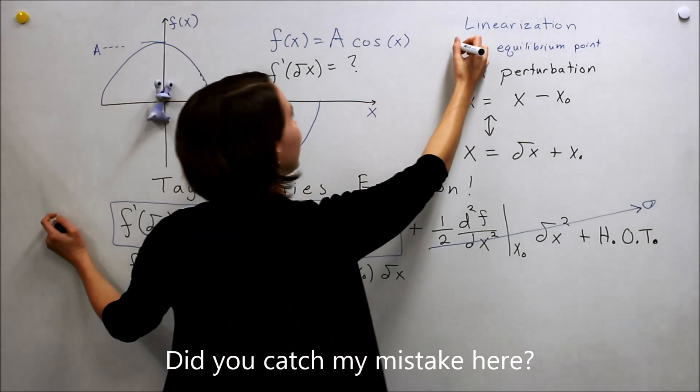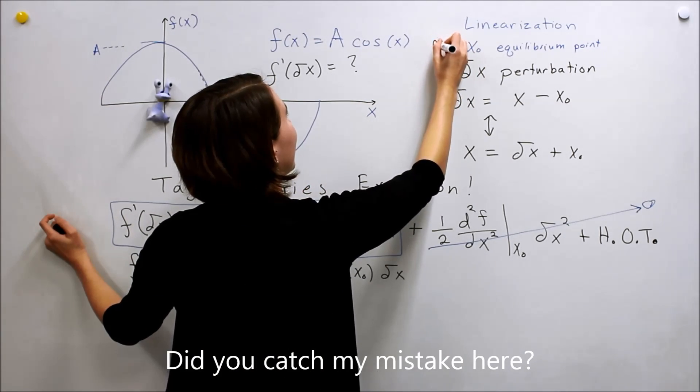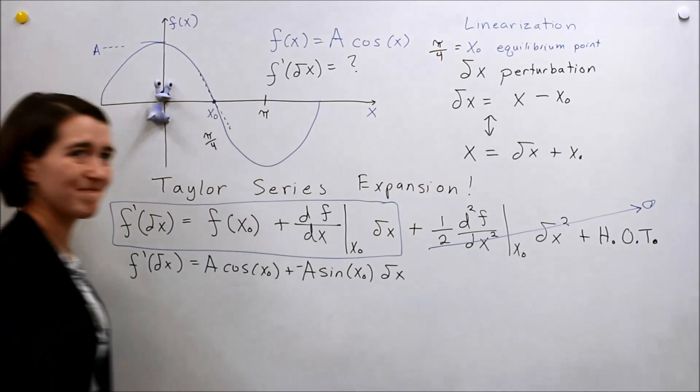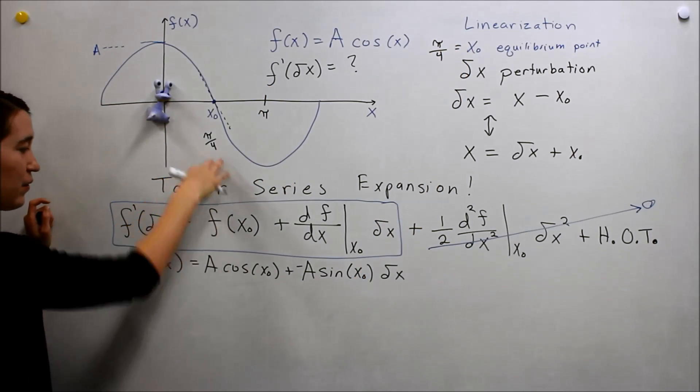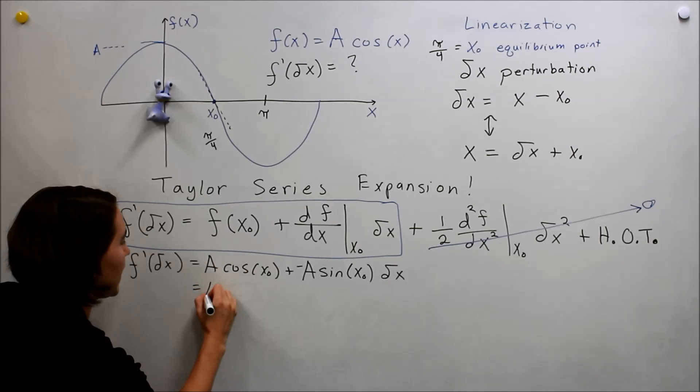So our equilibrium point is π over 4. And so we take that value and we plug it into here. We have A cosine of π over 4